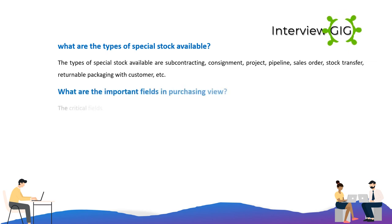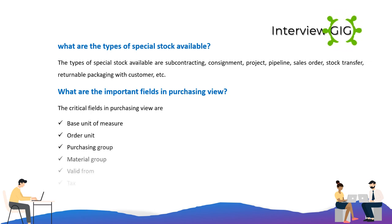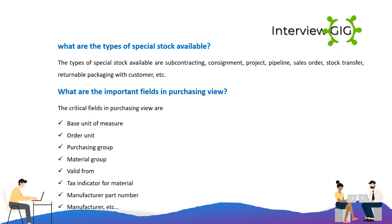What are the important fields in Purchasing View? The critical fields in Purchasing View are: base unit of measure, order unit, purchasing group, material group, valid from, tax indicator for material, manufacturer part number, manufacturer, etc.